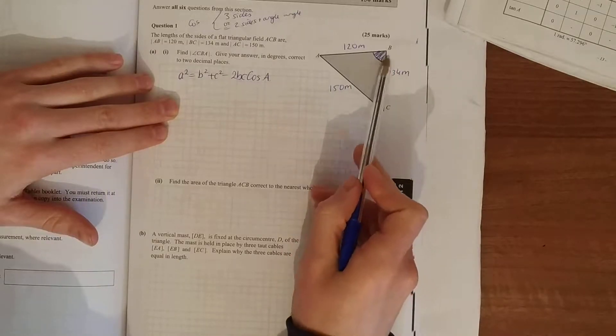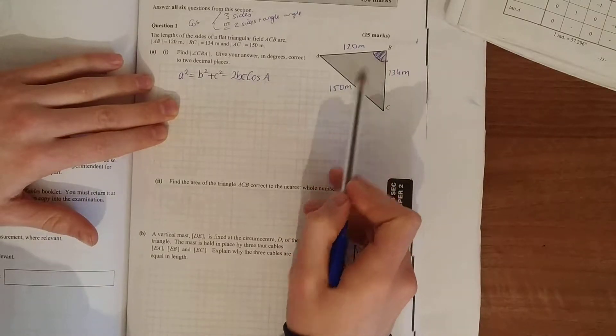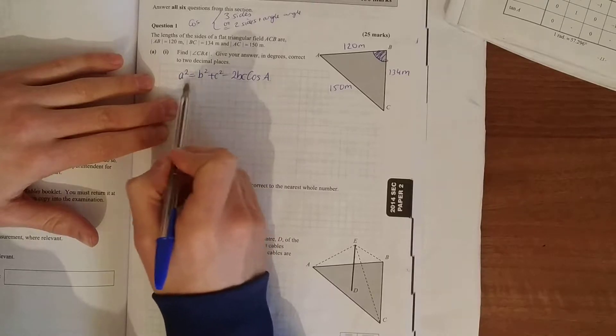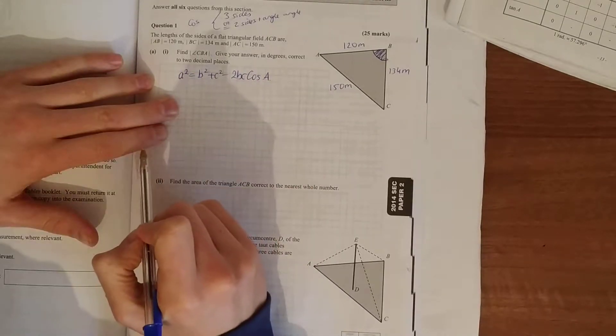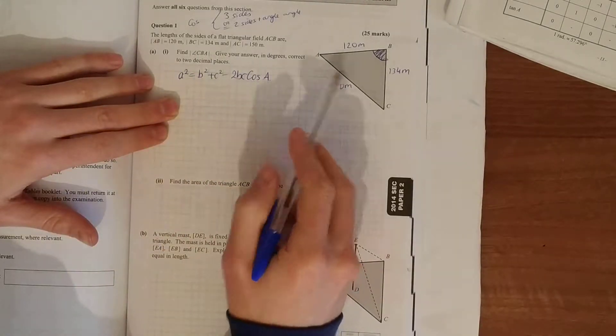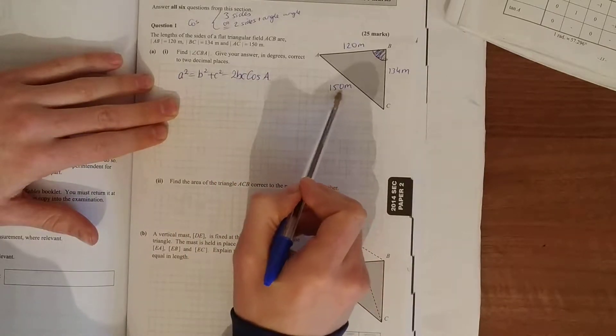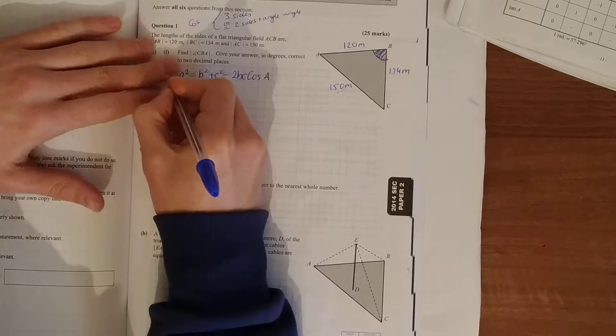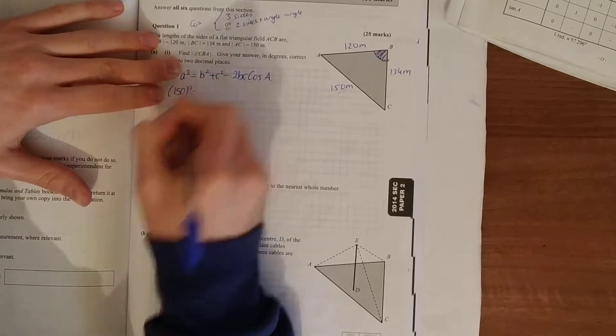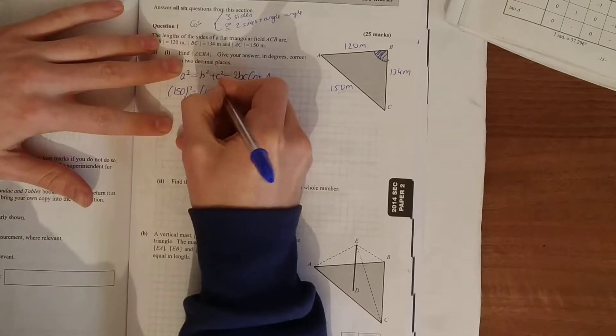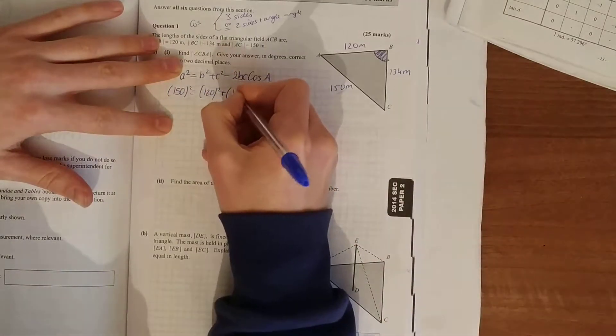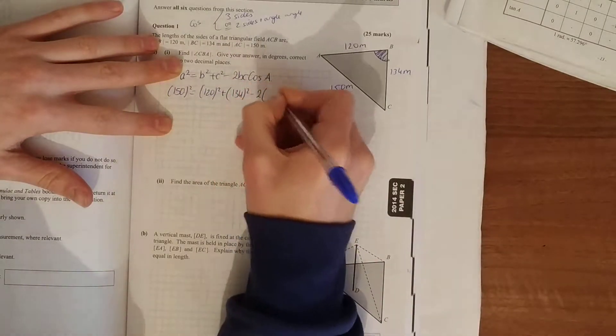Now whatever we're looking for, here we're looking for this angle, so this is the side opposite. We're working out this angle here, so I'm going to be referring to the side opposite. So 150 squared is equal to 120 squared plus 134 squared minus two times 120 times 134 cos A.